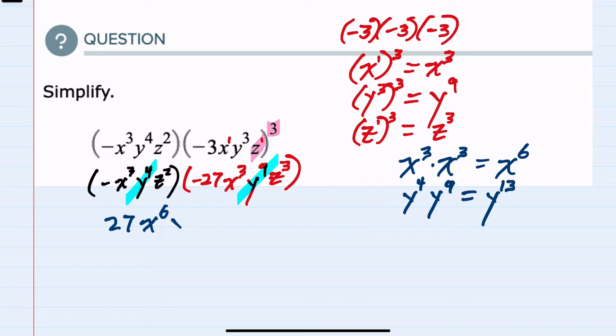And then for the z's, we have z2 times z3. Which again, we can write as a common variable z, adding the exponents. 2 plus 3 is 5, so z5.